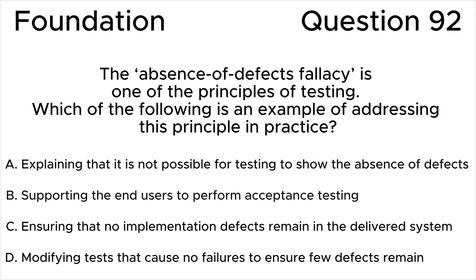ISTQB foundation level question 92. The absence of defect fallacy is one of the principles of testing. Which of the following is an example of addressing this principle in practice? A) Explaining that it is not possible for testing to show the absence of defects. B) Supporting the end users to perform acceptance testing. C) Ensuring that no implementation defects remain in the delivered system. D) Modifying tests that cause no failures to ensure few defects remain.